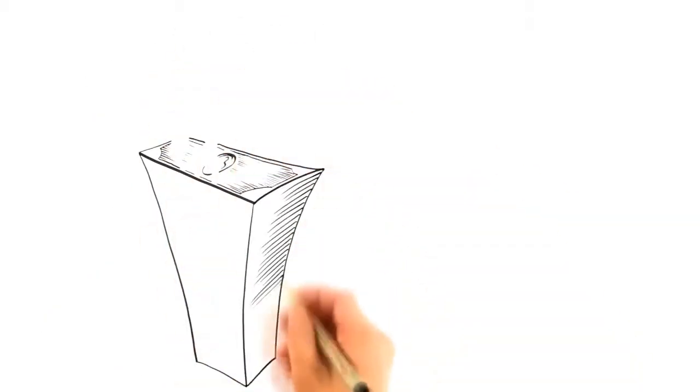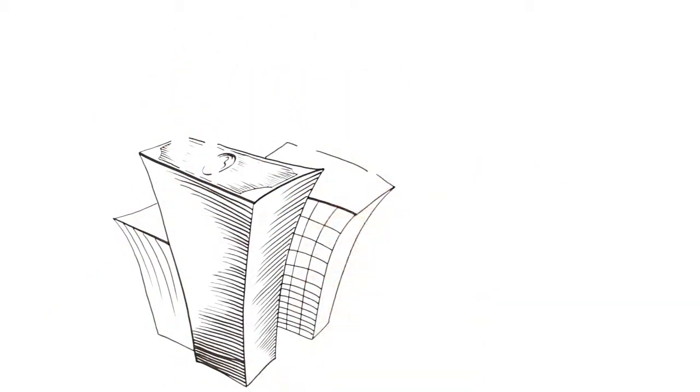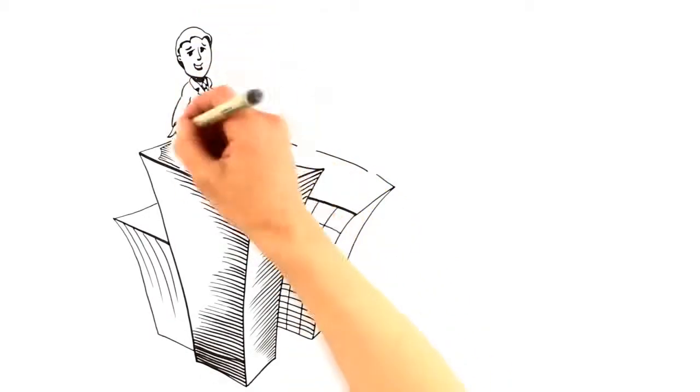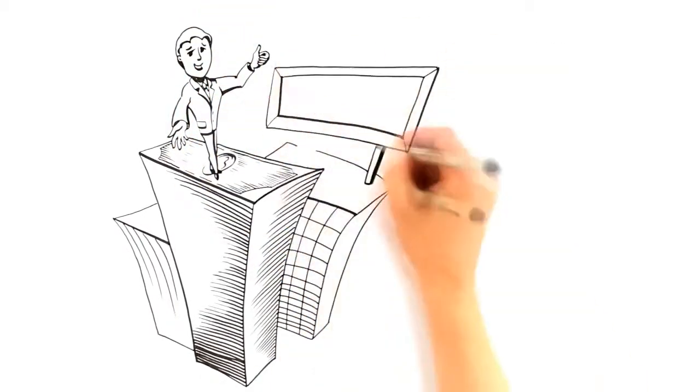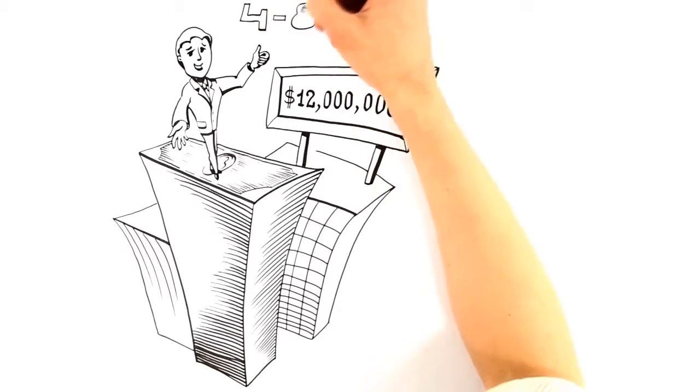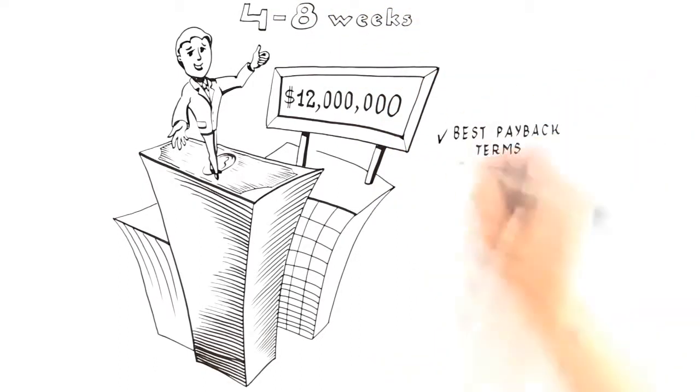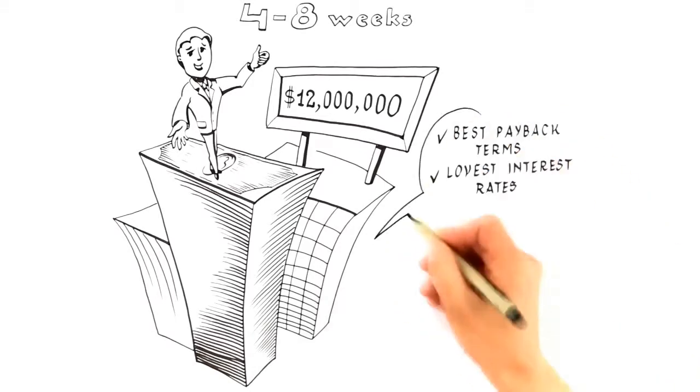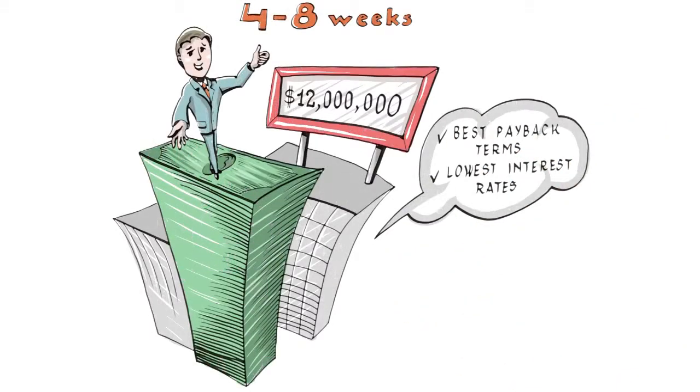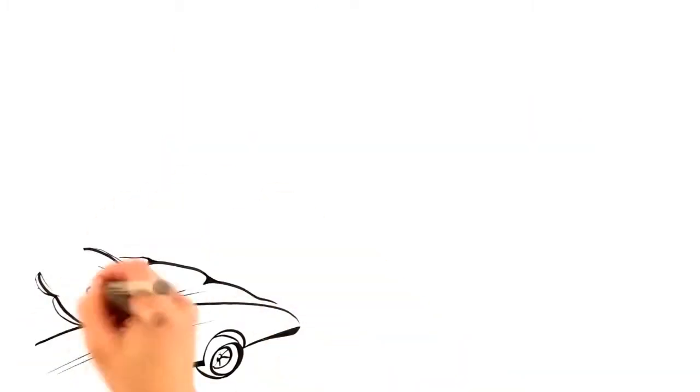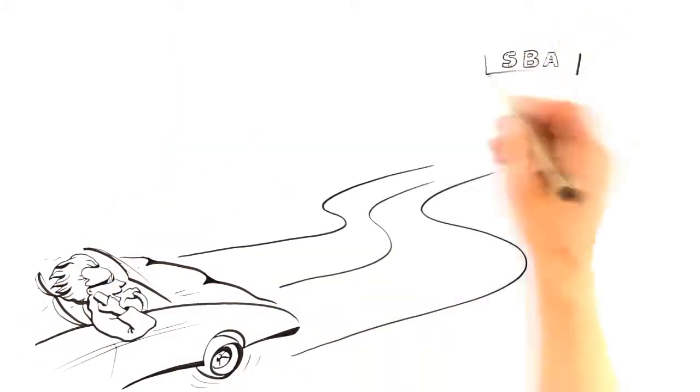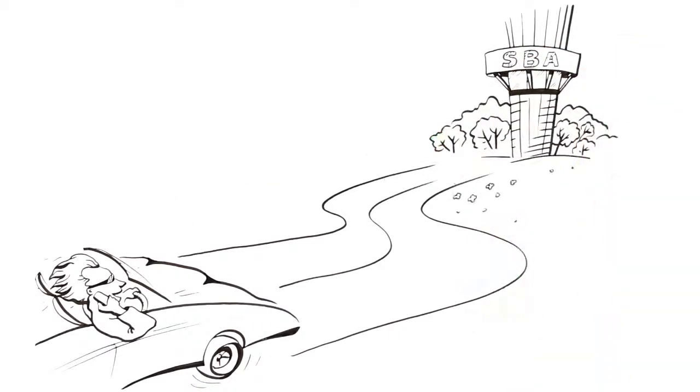Secured SBA loans are a perfect way for you to get large amounts of money for your business. You can be approved for as much as $12 million in financing in as little as 4 to 8 weeks. And you will get a loan with some of the best payback terms and low interest rates available today versus all other types of business financing. Contact us today to learn more and be on your way to securing your new SBA loan.